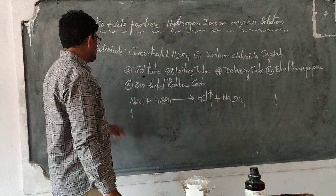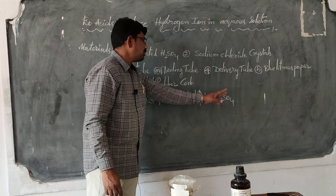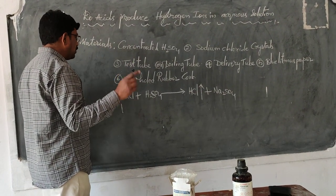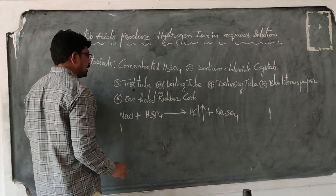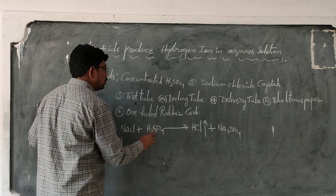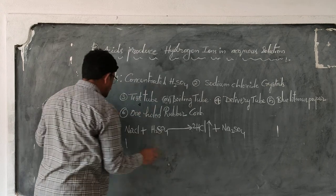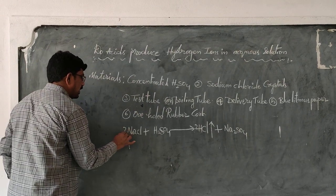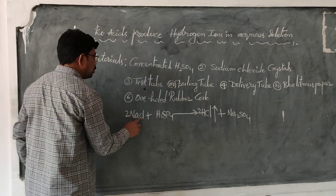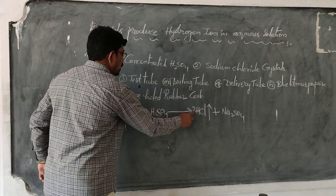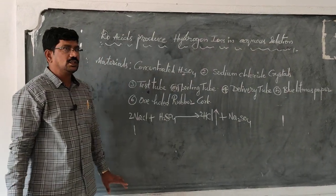Is the equation balanced? We must be very careful while writing the chemical equation — you have to balance it. How many hydrogens are there on the left? One. On the right? Two. So multiply NaCl by two. Now check: two sodiums on each side, two chlorines on each side, two hydrogens on each side, one sulfate on each side. Now it is balanced: 2NaCl + H2SO4 → 2HCl + Na2SO4.